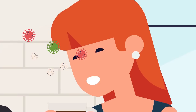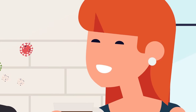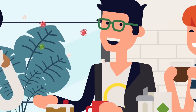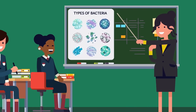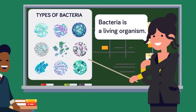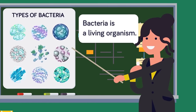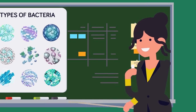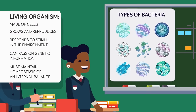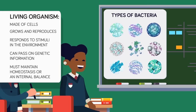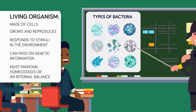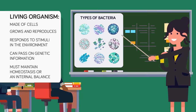Are bacteria and viruses living things? This is the first distinction between the two pathogens. Bacteria is most certainly alive. In order to be classified as a living thing, something must have five traits: it is made of cells, it grows and reproduces, it responds to stimuli and the environment, it can pass on genetic information, and it must maintain homeostasis, or an internal balance.